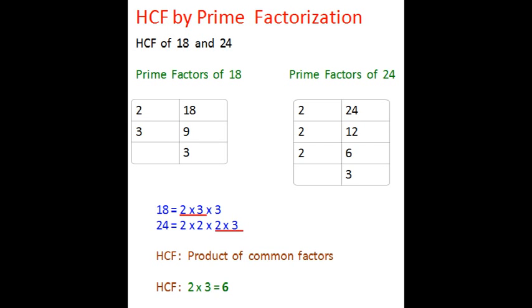What we want to find is really not only the common factors but the highest common factor. To figure out the highest common factor, we have to get these common prime factors and make a product of it. The product of these common prime factors, 2 multiplied by 3 is 6 and therefore the highest common factor is 6.